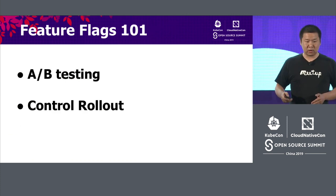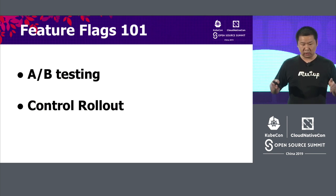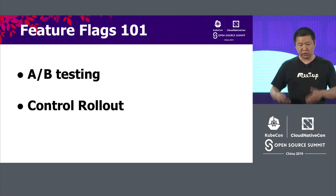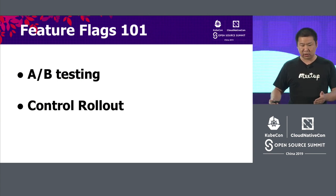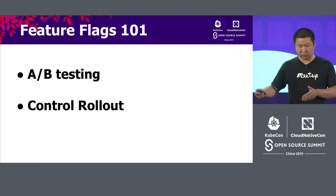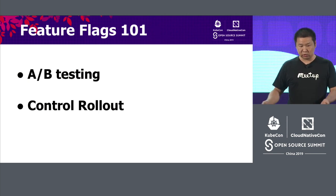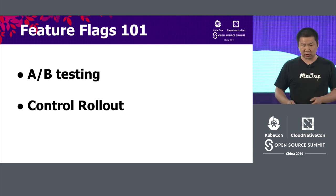Feature flag use case one is rolling out to different accounts. For example, in our case, we have feature tax calculations for some countries. We need to leverage the IP address to find out the country and determine whether the feature is suitable for the user. Sometimes you have GDPR issues and you don't want to roll out features to the European audience until you figure out the GDPR problems.